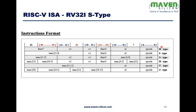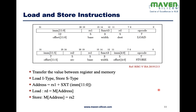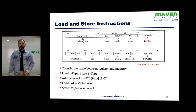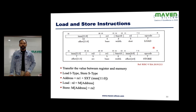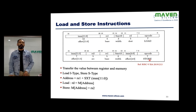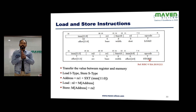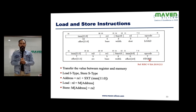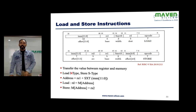We have seen R-type and I-type. Now let's look at S-type. There are two kinds of instructions: load and store. We use load and store instructions primarily for data transfer between register and memory. The load instruction is actually of I-type; only the store is S-type.